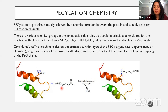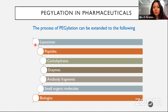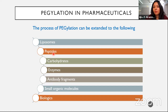It's not just proteins that will be PEGylated — there are many other things like liposomes, peptides, carbohydrates, enzymes, antibodies, small organic molecules, and biologics, all of which could be PEGylated. For pharmaceutical use, the most common things PEGylated are small organic molecules — normal drugs — and biologics, mostly protein in nature. Antibody fragments and peptides are also highly exploited. This is to show what other applications PEGylation technology could have.